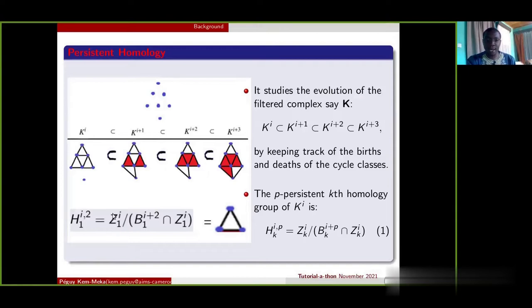In fact, according to this formula, I should look at the cycle that I created at time I, here a cycle, and then I should remove the one that has become boundary. So I should remove this one and I will be left with this one up. This one down is not part of the computation because it was not created at time I.